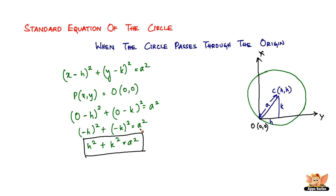You don't necessarily need to memorize this, because if you know the derivation you'll automatically arrive here. The only advantage of memorizing it is saving those three steps. If you know this beforehand, you can straight away say the standard equation becomes h² + k² = a² when the circle passes through the origin. That ends this video — I'll see you in the next one with another condition with respect to the standard equation of the circle.